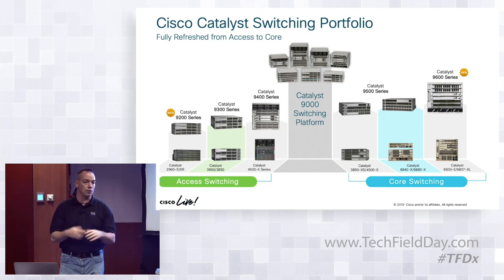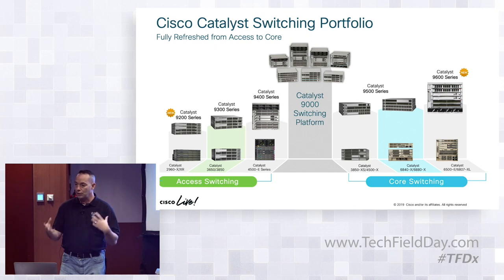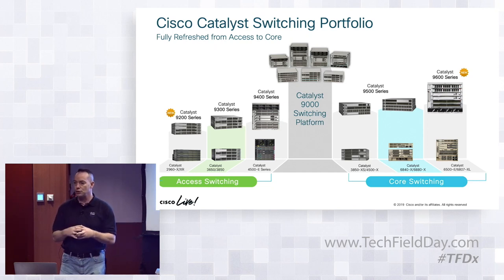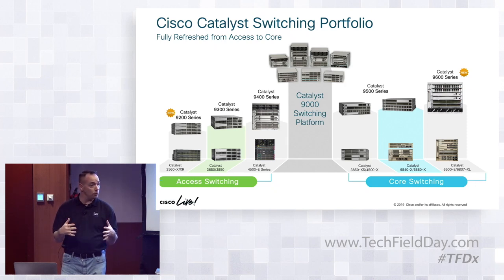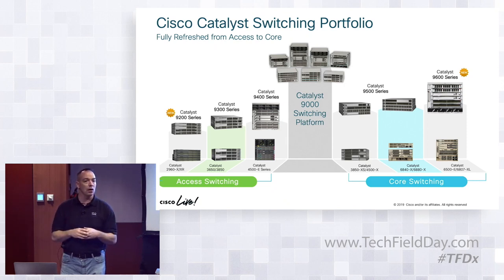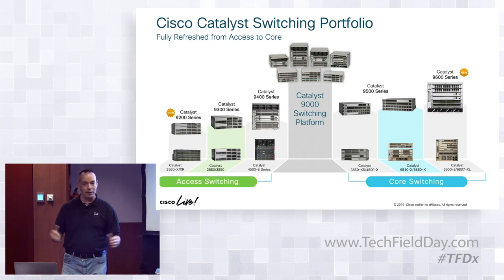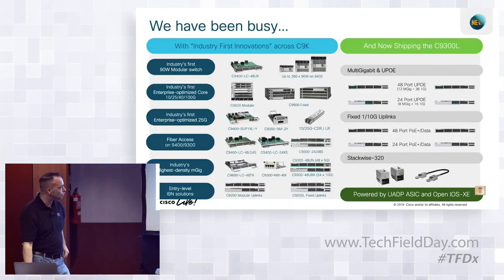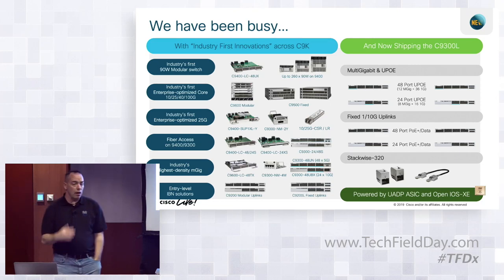You've built a lot of networks and dealt with the struggle of working with different platforms and different software versions. This is simple but extremely powerful — to have one family that behaves the same. The difference is just scale: how big is the ASIC, how big is the CPU, and these types of things.